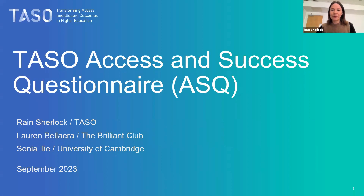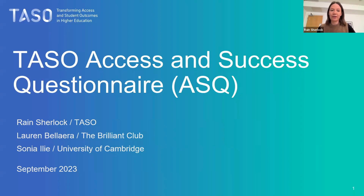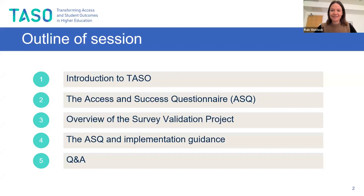I'm Rain Sherlock, Head of Evaluation here at TASO. I've been working with partners from The Brilliant Club — Lauren, who you can see on the call — and researchers from the University of Cambridge, including Sonia, to go through a multi-step process to develop the Access and Success Questionnaire. Today's session will cover an introduction to TASO and the ASQ, an overview of the project process, and practical guidance on the resources available.